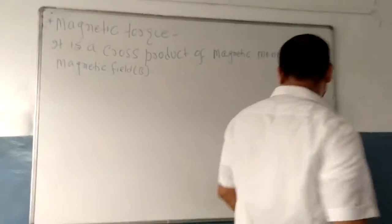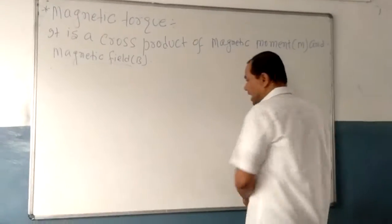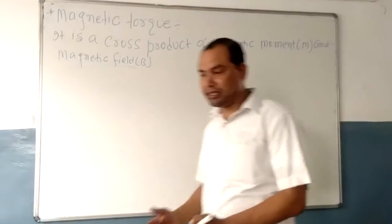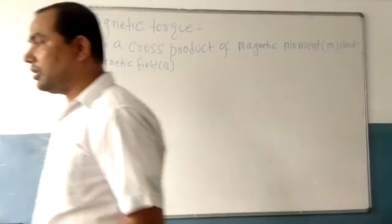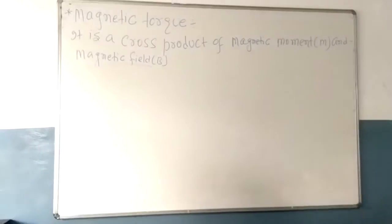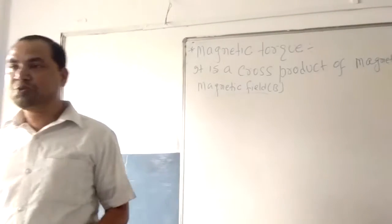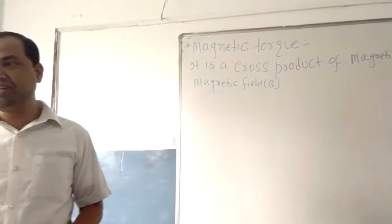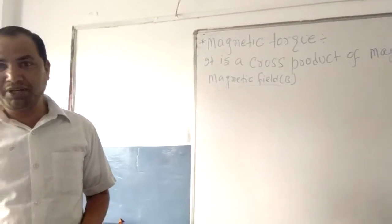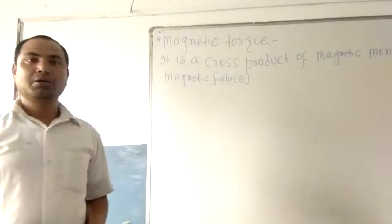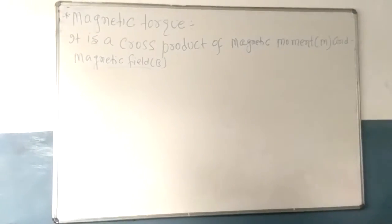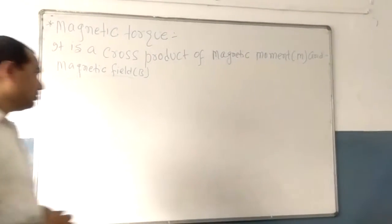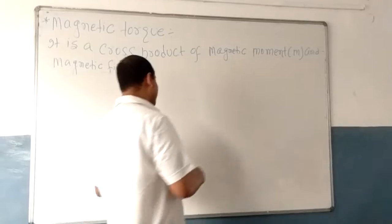This is a very important and interesting topic. I am going to explain it by the vector method. The torque is equal to the cross product of magnetic dipole moment and magnetic field. But before this, I am going to teach you about vectors.